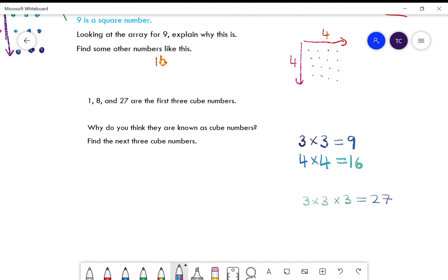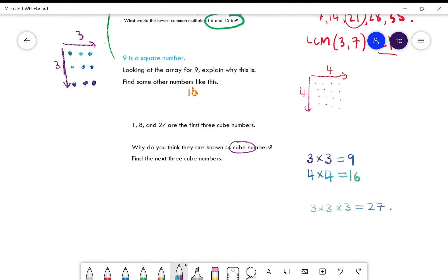I'm just going to write this down: 3 × 3 = 9, 4 × 4 = 16. So I'm writing that down, but I don't see any cubes here, so I'm interested to know why you think it's called a cube number.